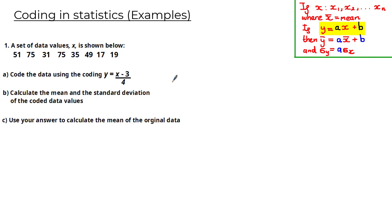Let's have a look at this first question. A set of data values x is shown below. The first part asks us to code the data using the coding y = (x − 3) / 4. To code the data, we simply substitute these values of x into this coding equation to get different values of y, which will form our new coded data.